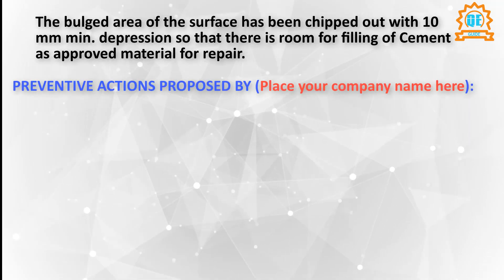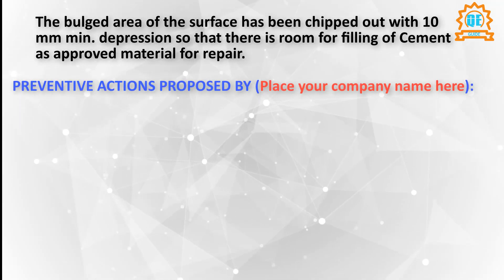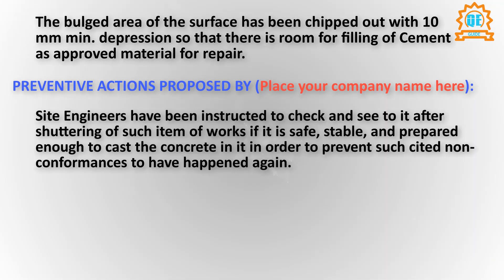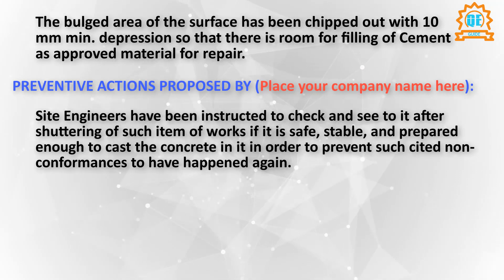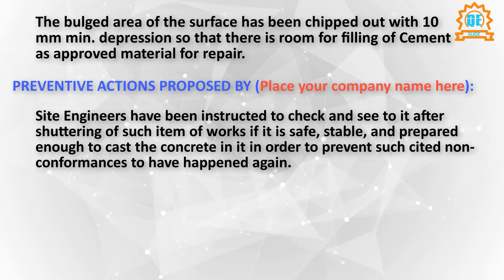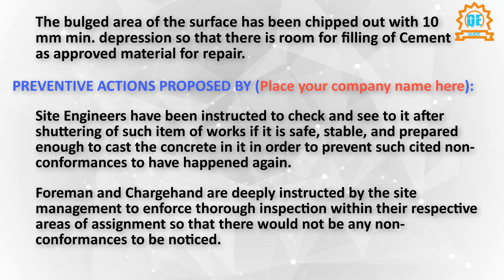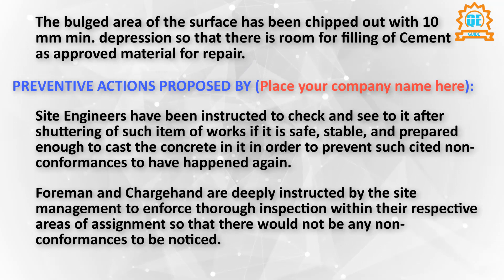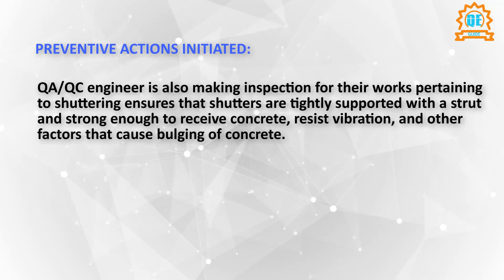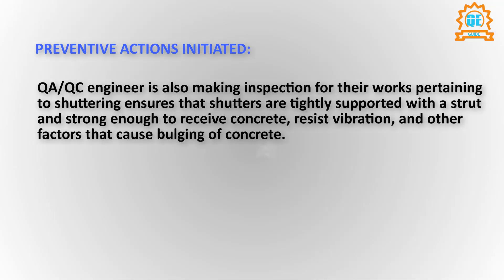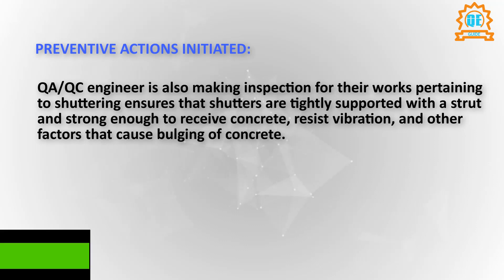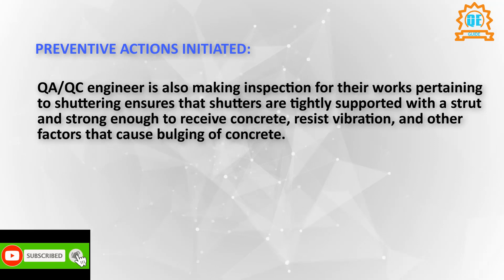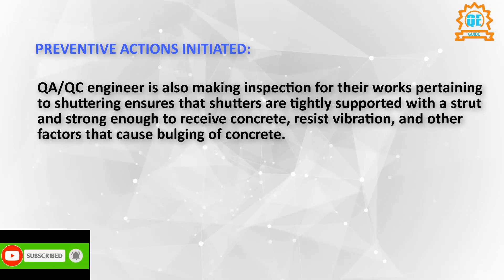Preventive actions: site engineers have been instructed to check after shuttering of such items of works — if it is safe, stable, and prepared enough to cast the concrete — in order to prevent such non-conformances from happening again. Foreman and charge hand site management are to enforce thorough inspection within their respective areas of assignment so there would not be any non-conformances noticed. QAQC engineer is also making inspections for shuttering works, ensuring that shutters are tightly supported with struts and strong enough to receive concrete, resist vibration, and other factors that cause bulging.